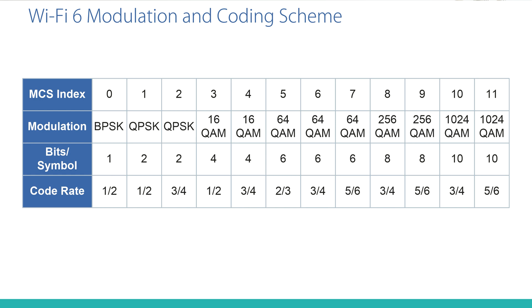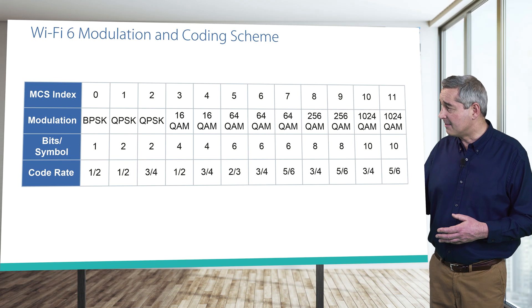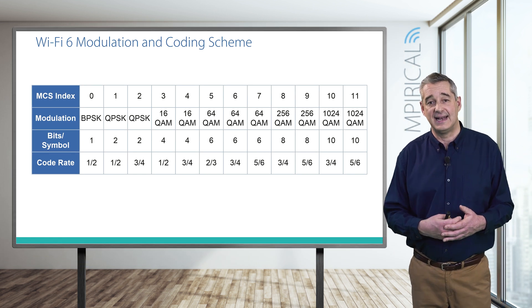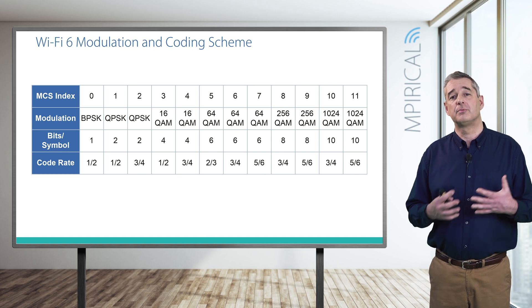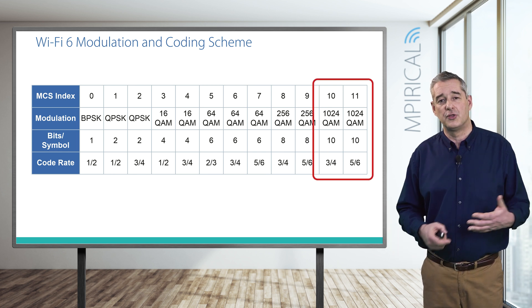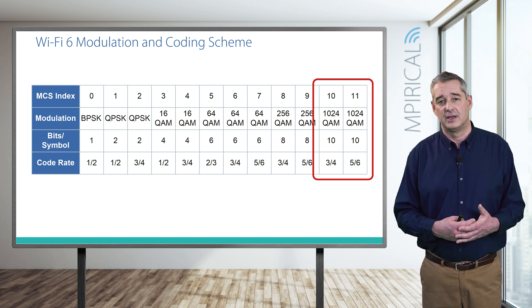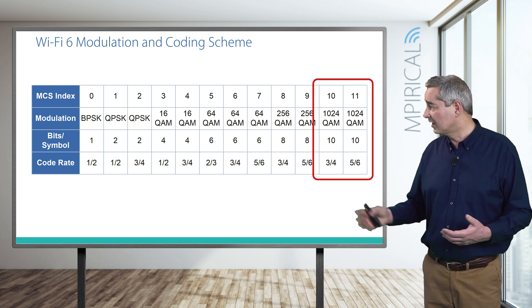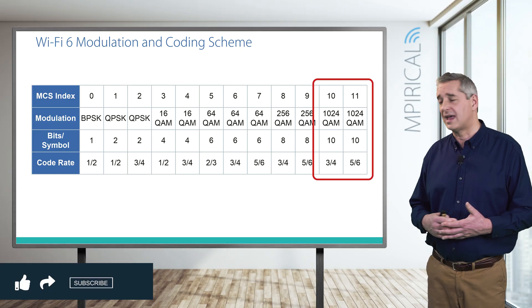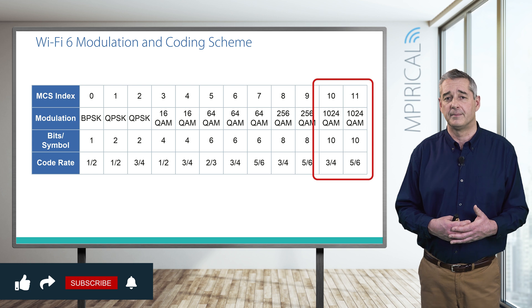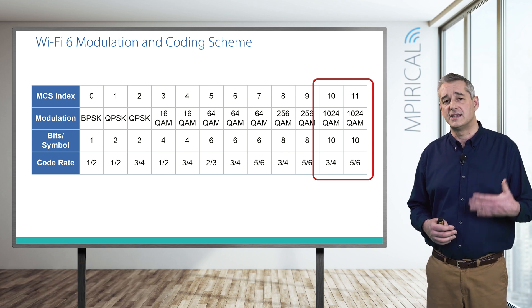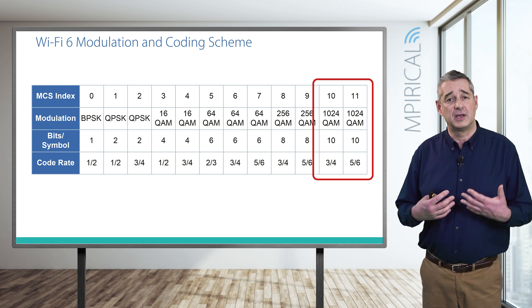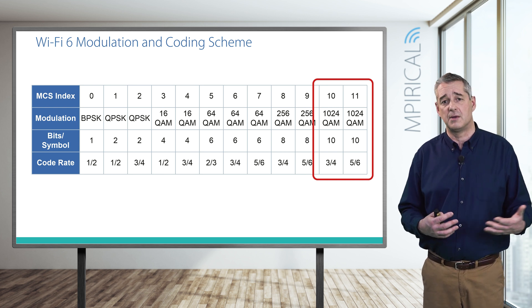On the table we should also note the change in the modulation and coding scheme. The MCS index now ranges between 0 and 11 — fundamentally very similar to Wi-Fi 5, but we've added two further entries at 10 and 11. The key addition is the new modulation technique of 1024 QAM. That means the radio wave can exist in 1024 different states, and therefore each state change represents 10 bits, pushing the data rate still further. However, for this to work we do need a high quality radio link; otherwise there are too many errors and it becomes difficult to differentiate between so many different states.